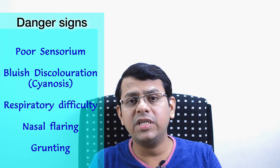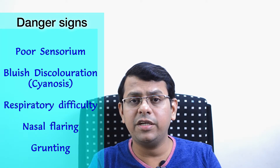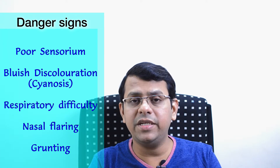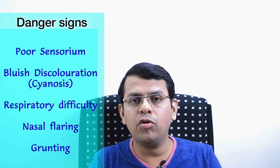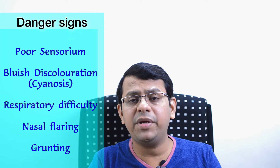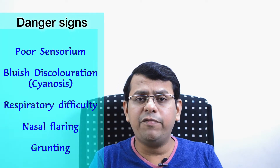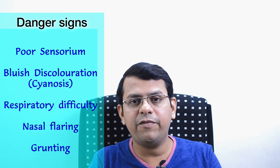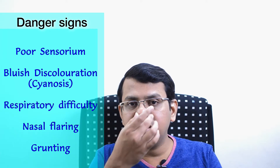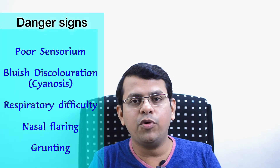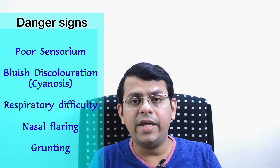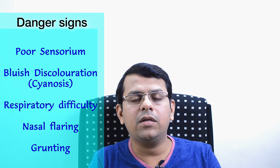What are the danger signs in pneumonia? If the child or individual has a poor sensorium — they are confused, lethargic, or difficult to arouse from sleep — that is a danger sign. If they turn blue, especially the peripheries like hands, feet, nose, and lips, that is another danger sign. Very fast breathing, inability to breathe, nasal flaring with each respiration, or a grunting sound can also be danger signs of pneumonia.